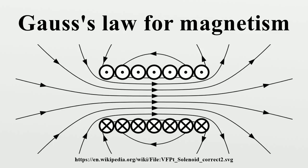The integral form of Gauss's law for magnetism states that the surface integral over any closed surface S equals zero, where S is any closed surface and dA is a vector whose magnitude is the area of an infinitesimal piece of the surface S, and whose direction is the outward-pointing surface normal. The left-hand side of this equation is called the net flux of the magnetic field out of the surface, and Gauss's law for magnetism states that it is always zero. The integral and differential forms are mathematically equivalent due to the divergence theorem.